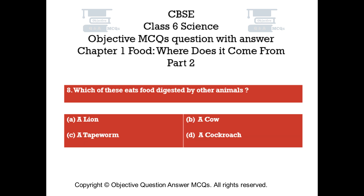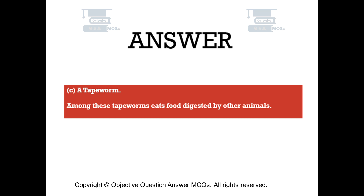Question number 8. Which of these eats food digested by other animals? Option A: A lion. Option B: A cow. Option C: A tapeworm. Option D: A cockroach. The right answer is Option C. Among these, tapeworms eat food digested by other animals.